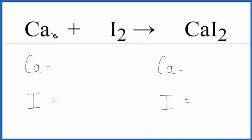We have one calcium—it's not written there, but we assume there's one calcium—two iodine atoms, one calcium on the product, and then we have these two iodine atoms.